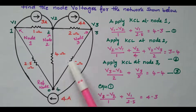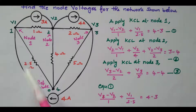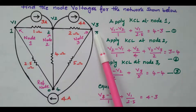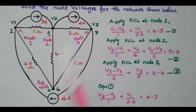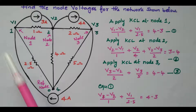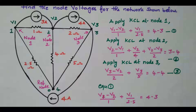This is the reference node — the return point. Node 4, but the potential at this reference node is 0. So we have three nodes: 1, 2, and 3 with voltages V1, V2, and V3. The fourth node is the reference node. Our aim is to find the node voltages V1, V2, and V3.